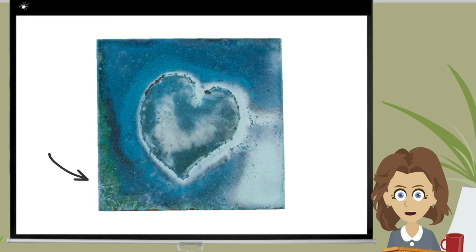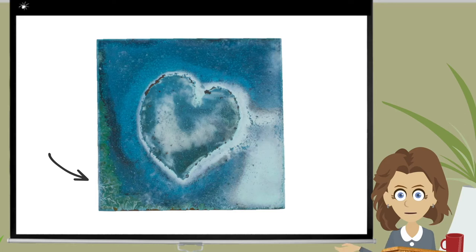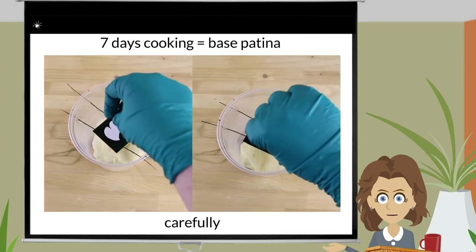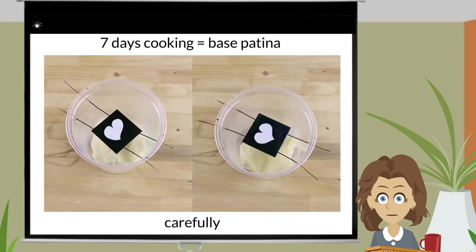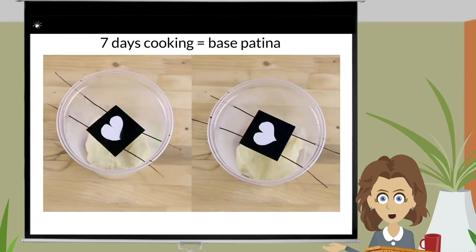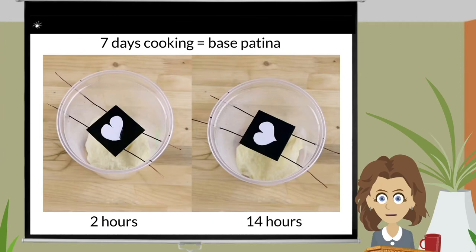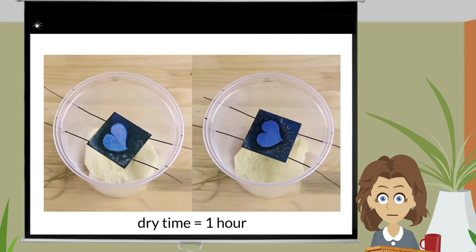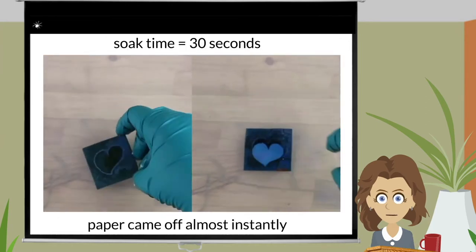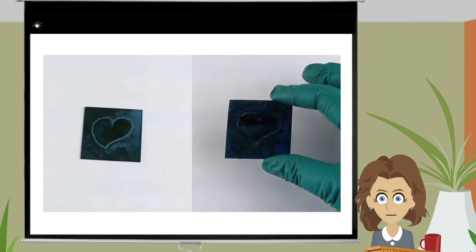But decided to cook up two more samples to see if I could get more green. I started with a base patina which first cooked for seven days. Quickly, so as not to let the base patina dry but carefully, I placed a positive watercolor heart on the base patina, sprayed both samples with an ammonia salt solution, letting one sample cook for two hours and the other sample for 14 hours. Let dry for one hour, soaked in warm water, let fully dry.